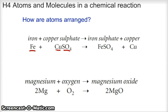If we look over on the right side, instead of iron by itself, we now have iron bound to sulfate, and we have copper by itself. So that's an example of how atoms rearrange themselves and join together in new combinations.